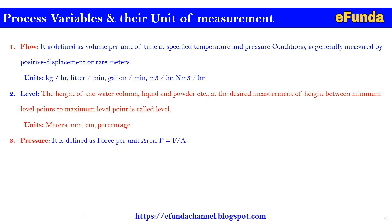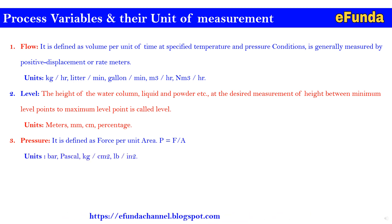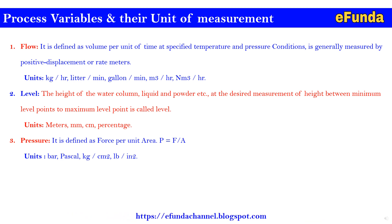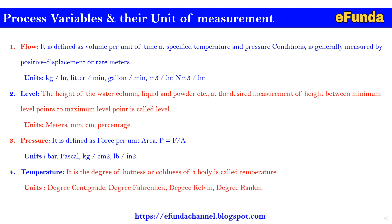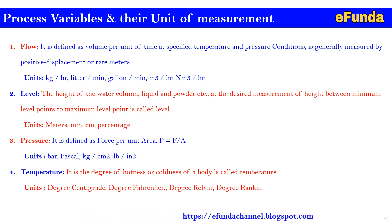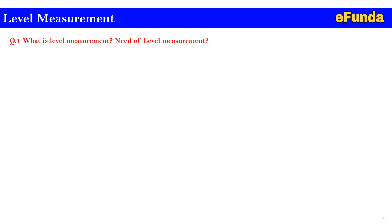Third is pressure — it is defined as force per unit area, where P equals F divided by A. Units are bar, pascal, kg per centimeter square, lb per inches, etc. Fourth is temperature — the degree of hotness or coldness of a body is called temperature. Units are degree centigrade, degree Fahrenheit, degree Kelvin, degree Rankine, etc.